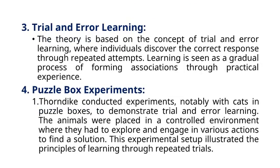Learning is seen as the establishment of associations or connections between a stimulus and the appropriate response. The theory is based on the concept of trial and error learning, where individuals discover the correct response through repeated attempts. Learning is seen as a gradual process of forming associations through practical experience. Thorndike conducted experiments, notably with cats in puzzle boxes, to demonstrate trial and error learning. The animals were placed in a controlled environment where they had to explore and engage in various actions to find a solution, illustrating the principles of learning through repeated trials.